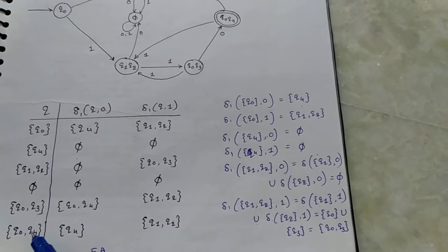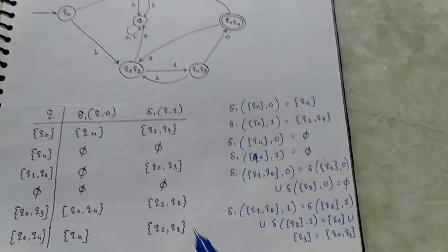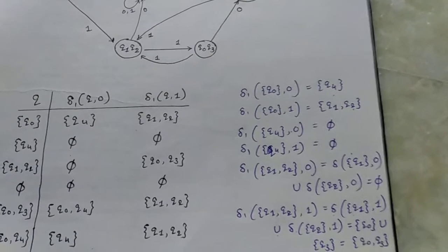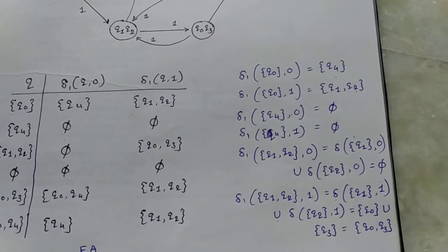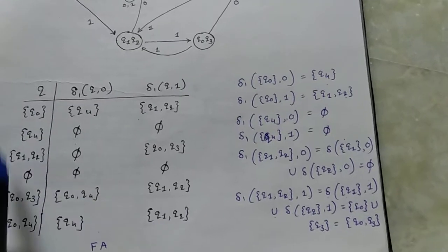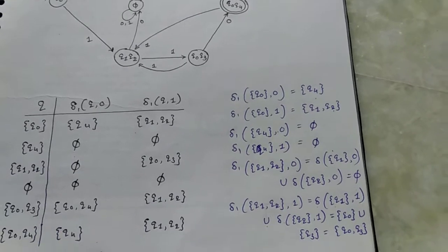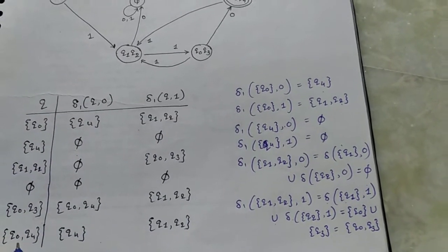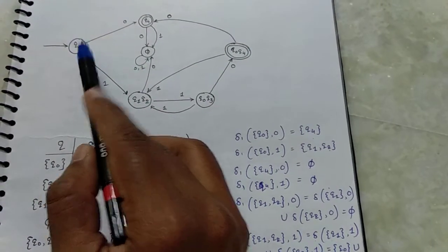Now next new state is q0q4. Find subset constructions for q0q4 to 0, which is q4, and q0q4 to 1, which is q1q2. If any conversion is asked in your exam, then all the subset constructions are written.